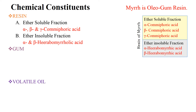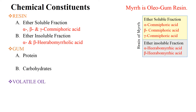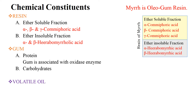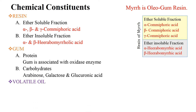The gum of Myrrh consists of proteins and carbohydrates, and is associated with an oxidase enzyme. The carbohydrate portion of the gum contains arabinose, galactose, and glucuronic acid.